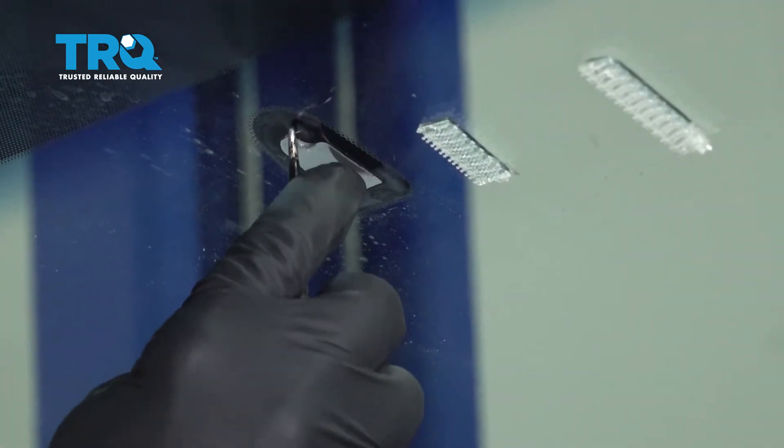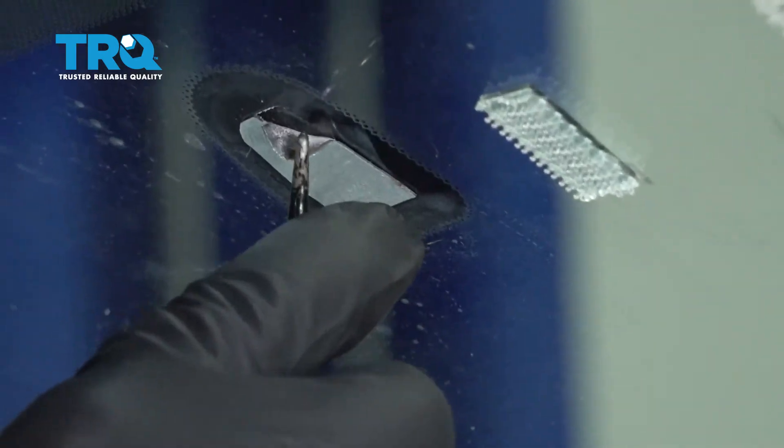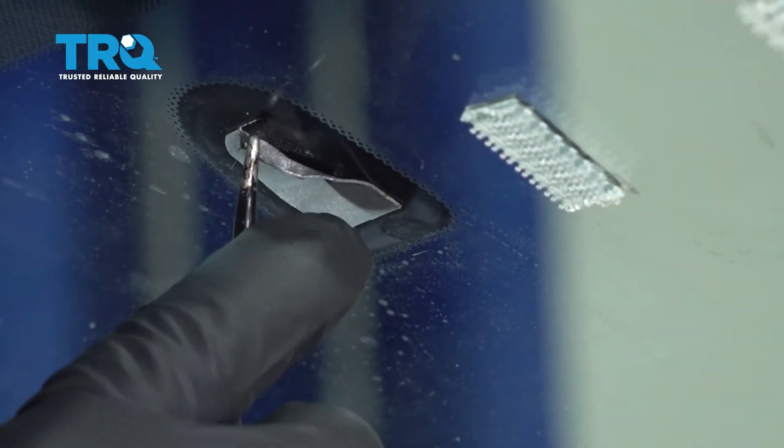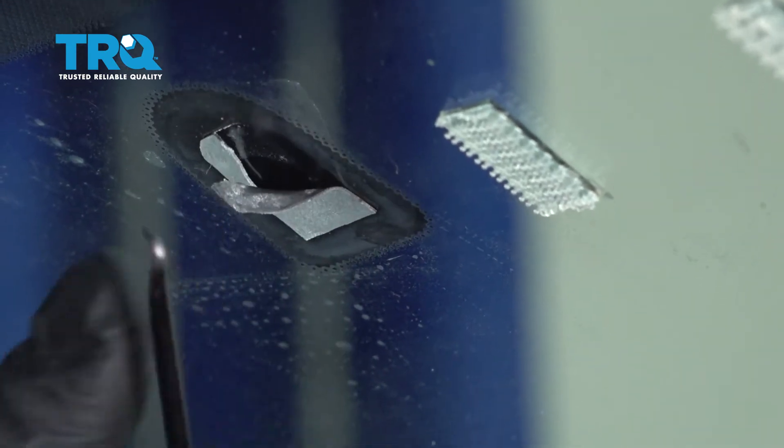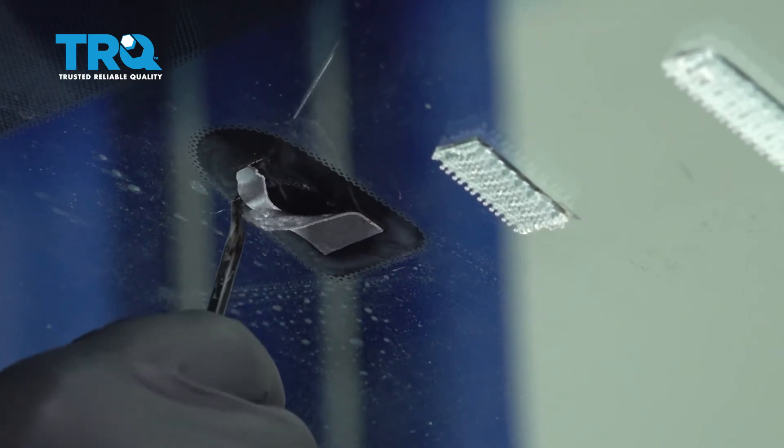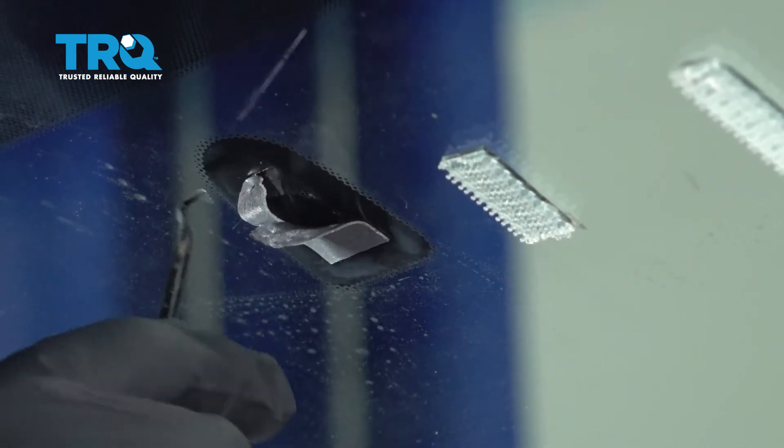I'm just using a small pick here to grab the adhesive off the windshield. Just being careful, working that a little bit.